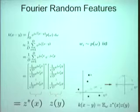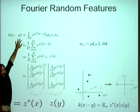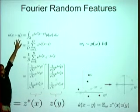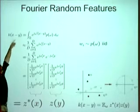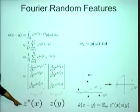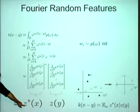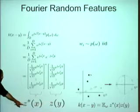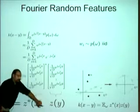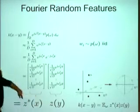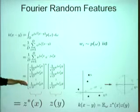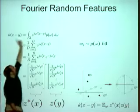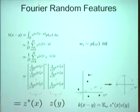This only works with shift-invariant kernels — you have to be able to represent the kernel in that form. We want to derive random features such that the inner product between the randomly featurized inputs is approximately equal to the value of the kernel. Step one: take the Fourier transform of your kernel. Step two: p is the Fourier transform of the kernel — we're going to replace the integral by approximating it with an average. Treat this Fourier transform as a probability distribution and draw samples from it.